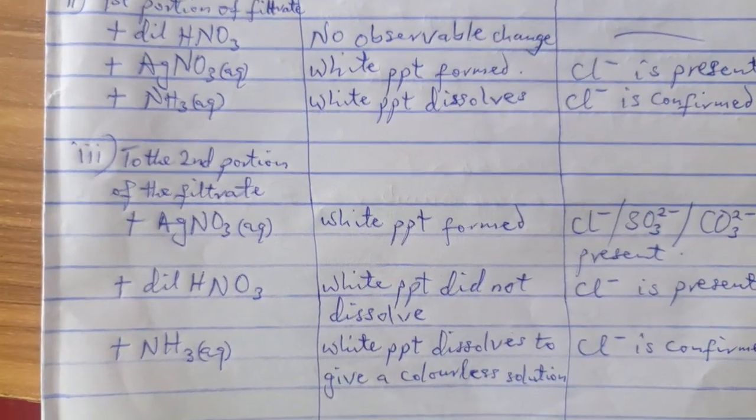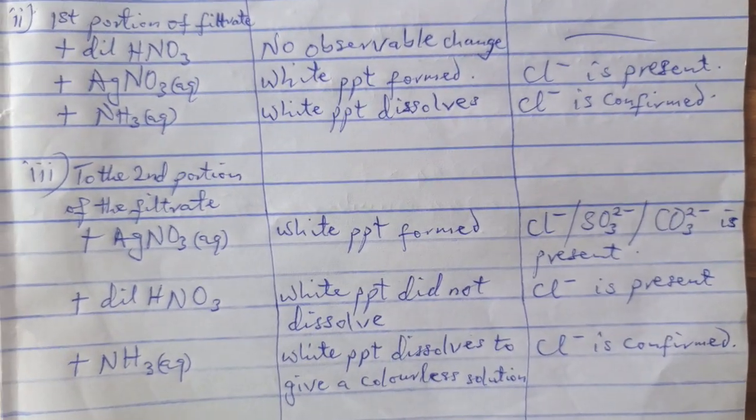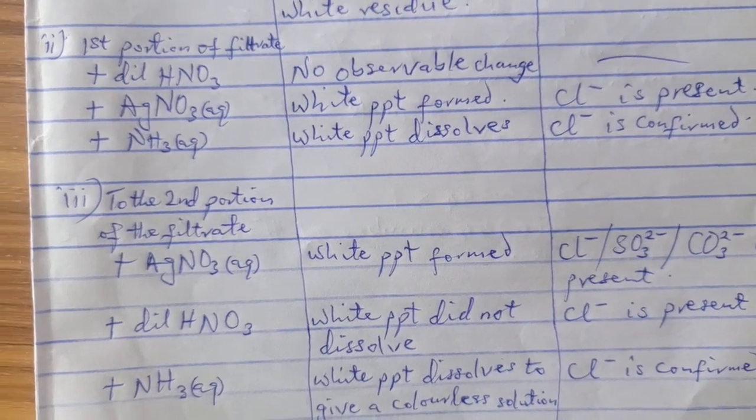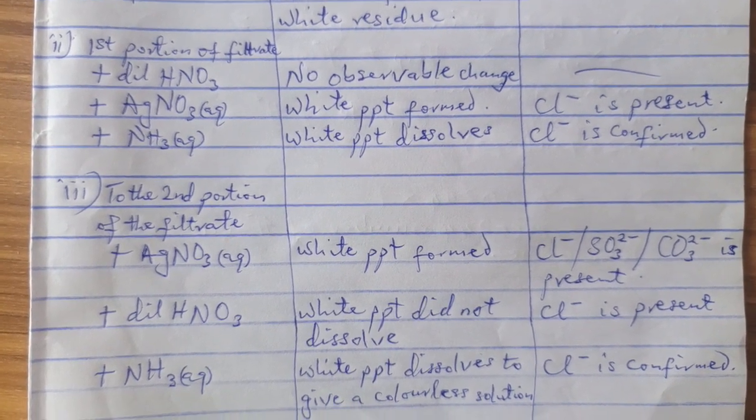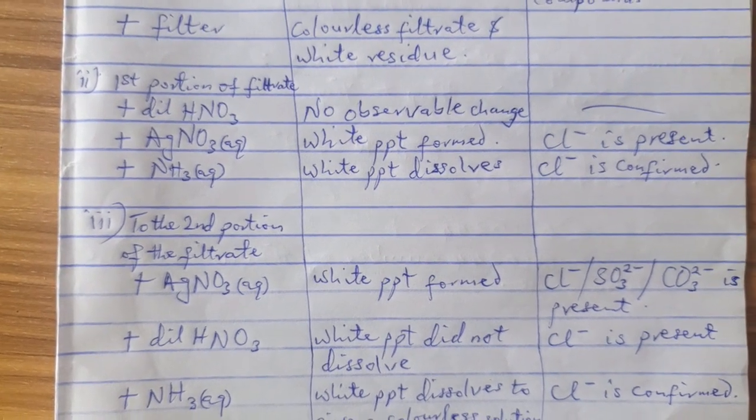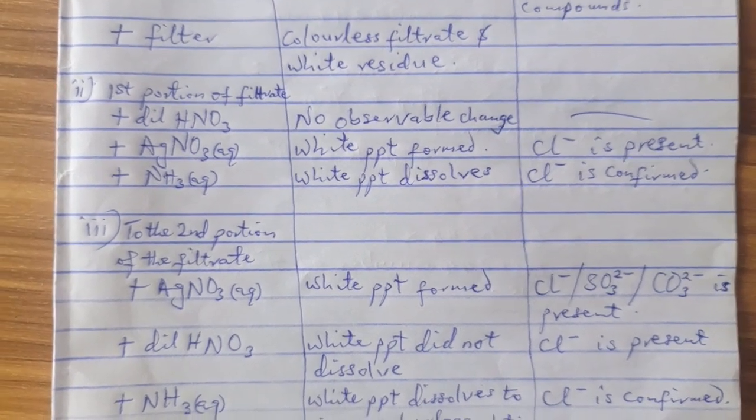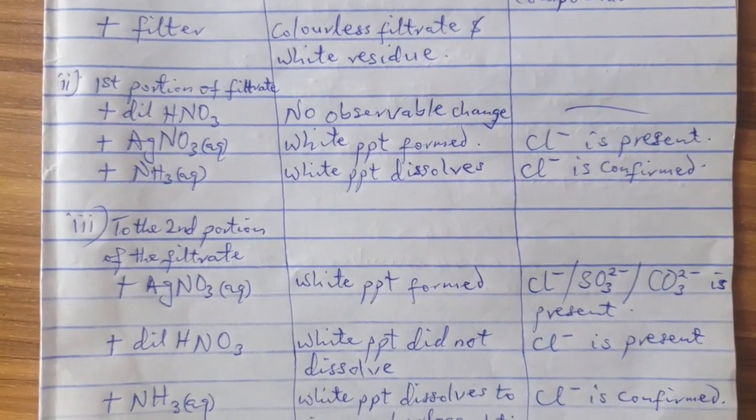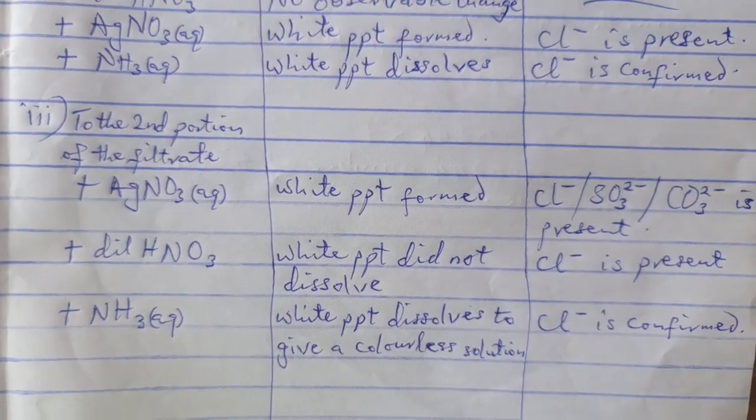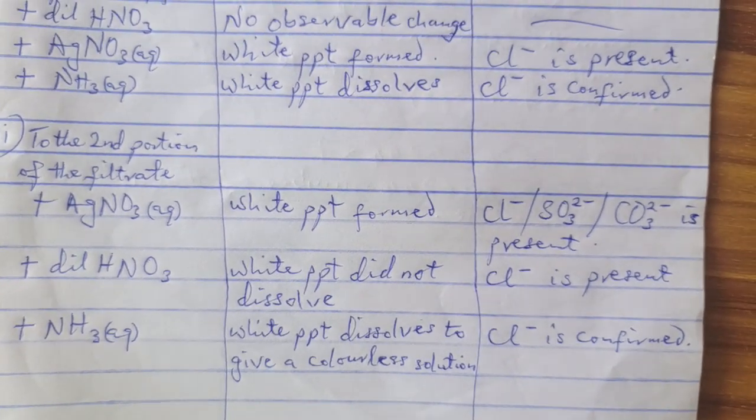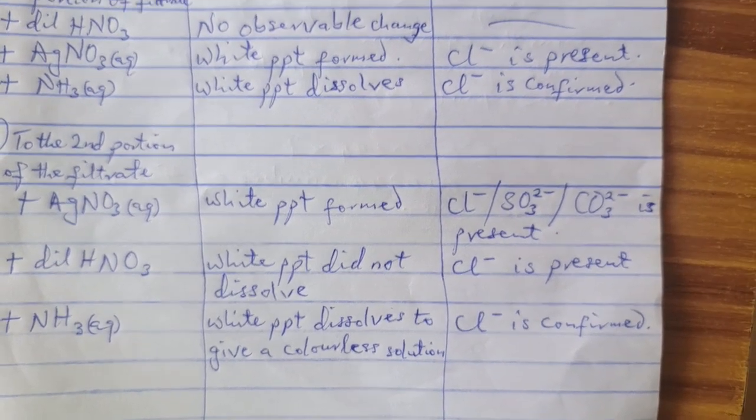So you move on to adding dilute HNO3. When you add that white ppt that was formed, it will still remain. It will not dissolve. So you now suspect it to be Cl- that is present. If it dissolves, these other two, SO3^2-, CO3^2-, any of them might be present. But since it refused to dissolve, Cl- is present, then confirm your test with NH3 aqueous. White ppt dissolves to give a colorless solution. And that's what Cl- confirmed.